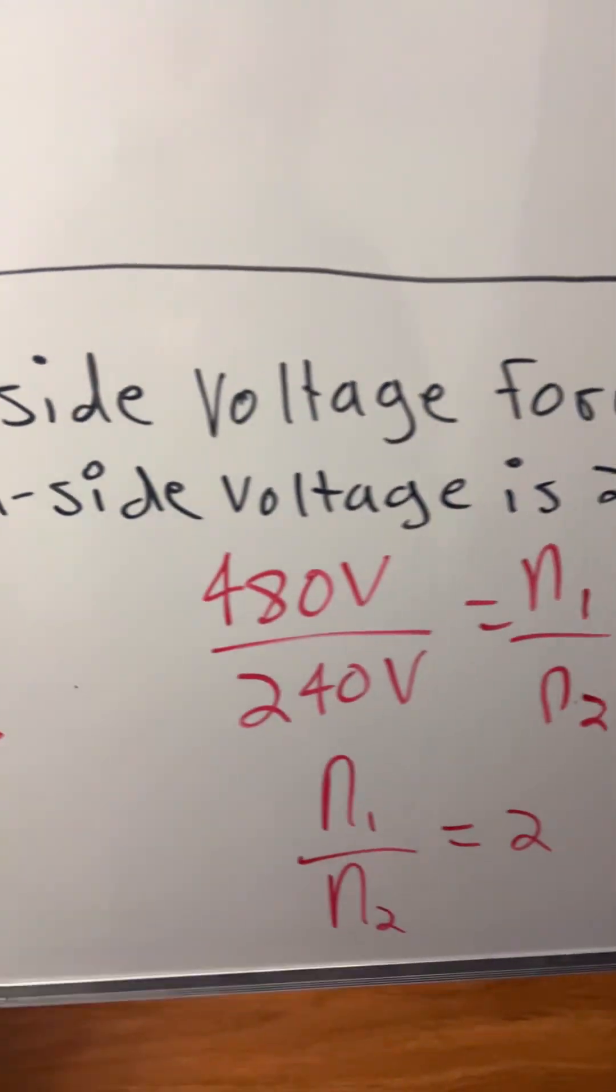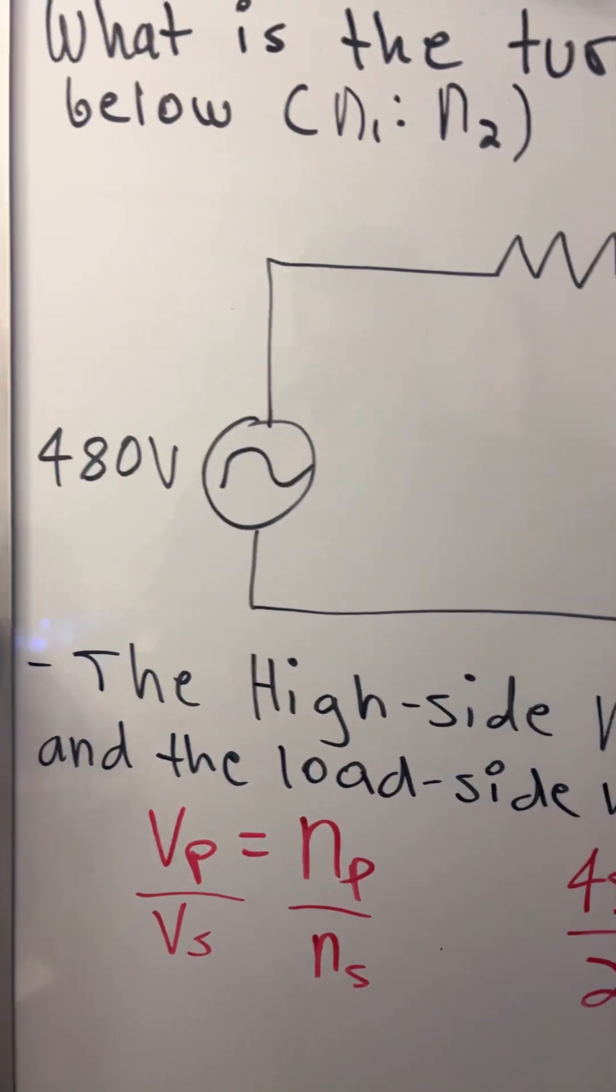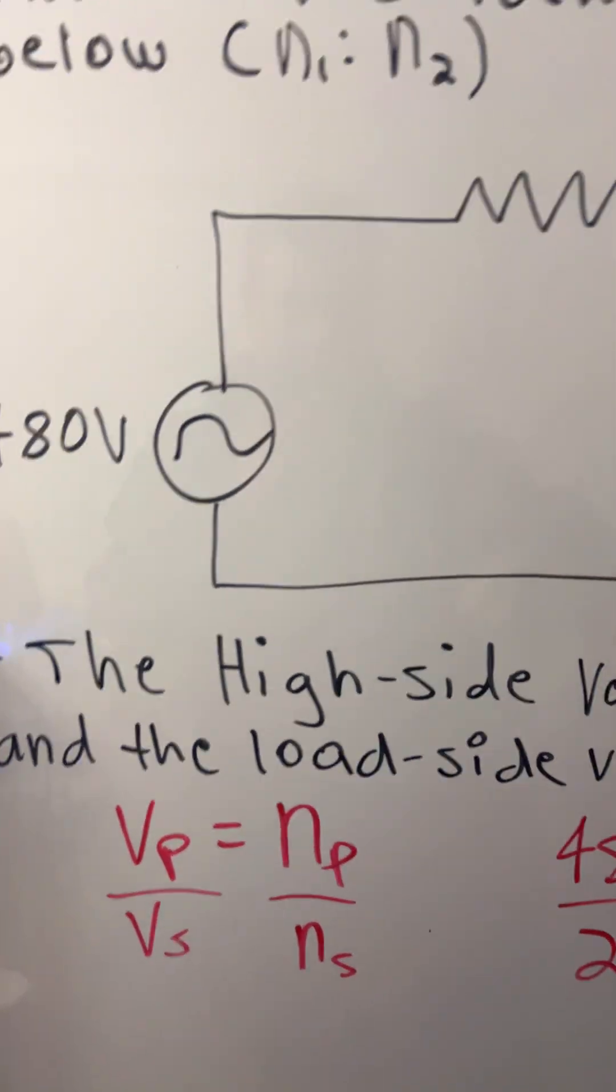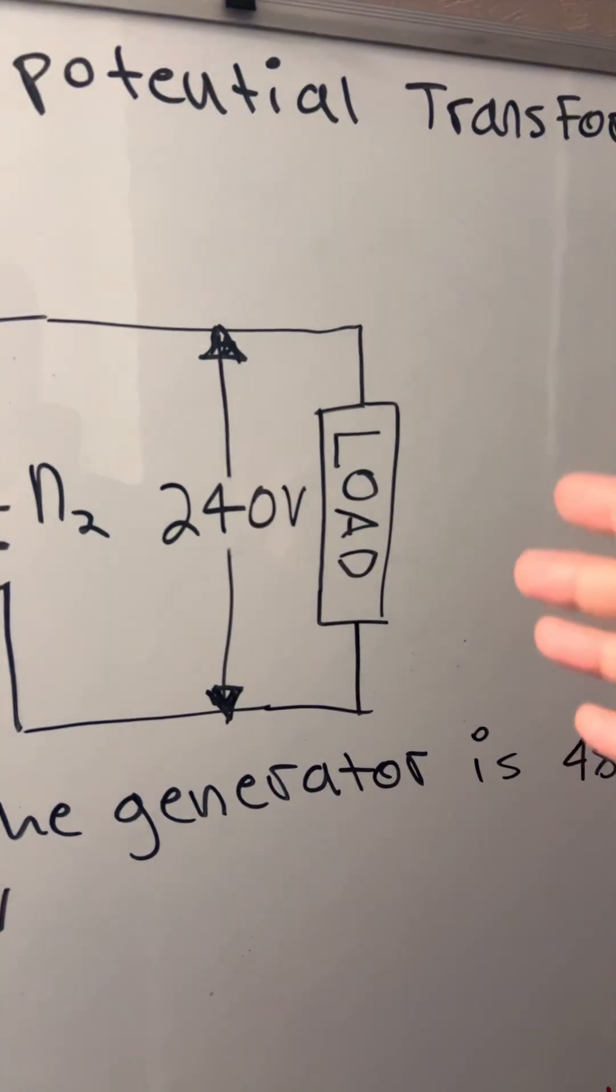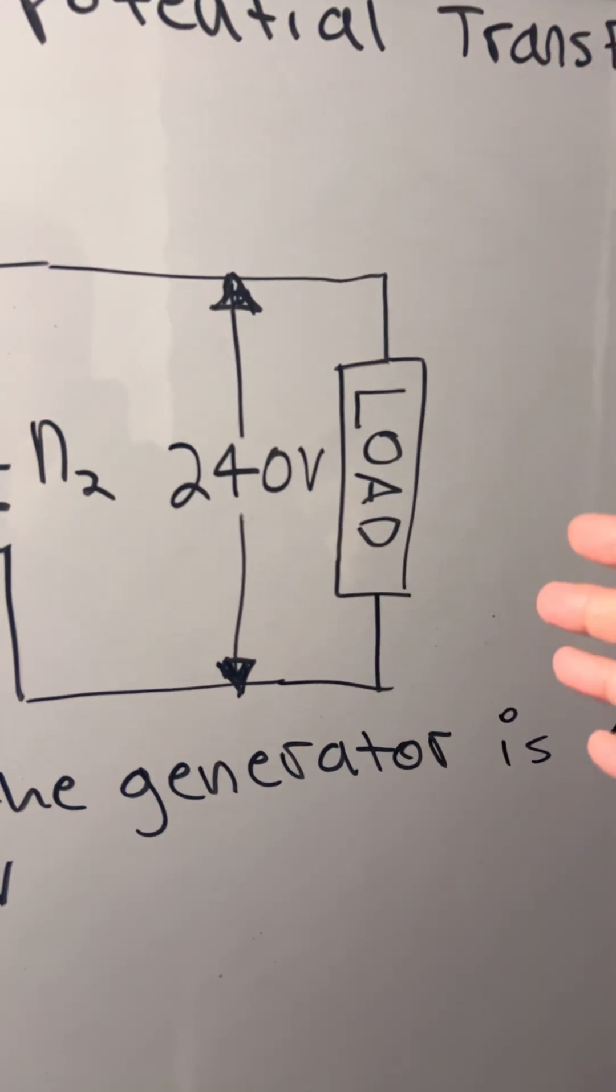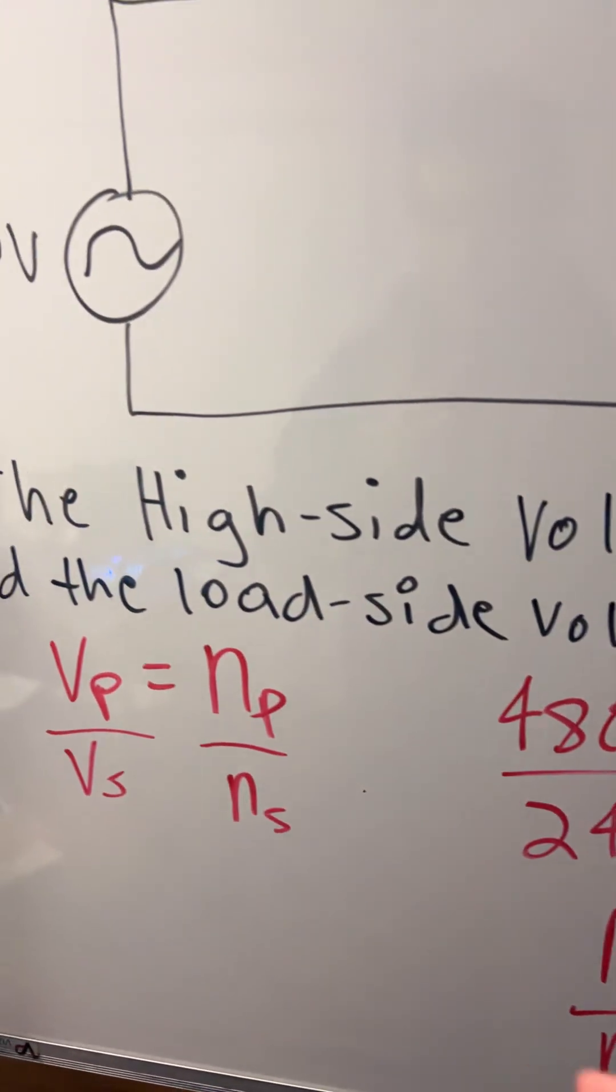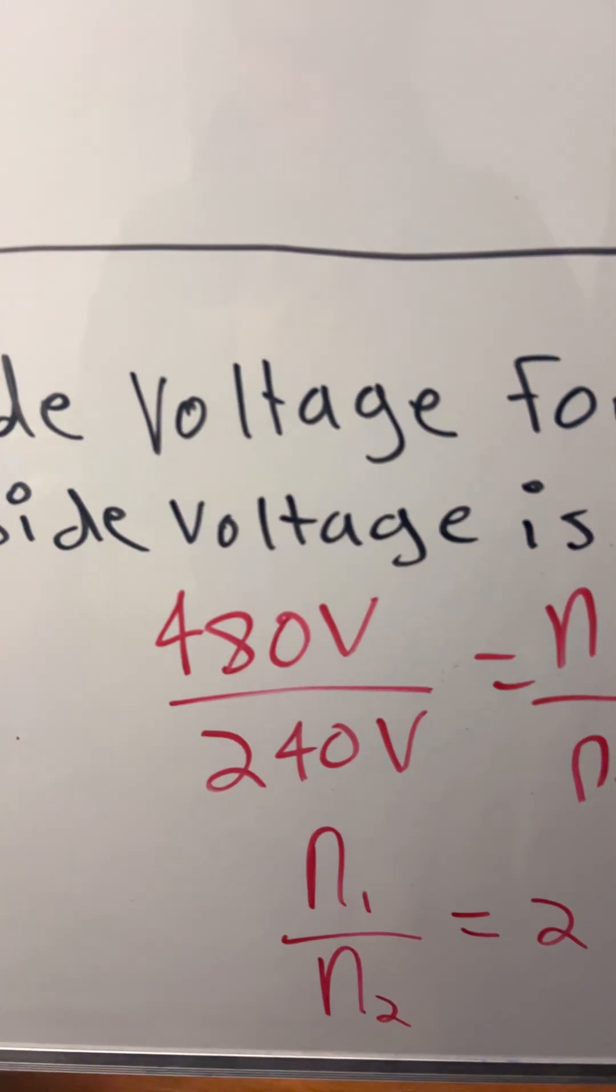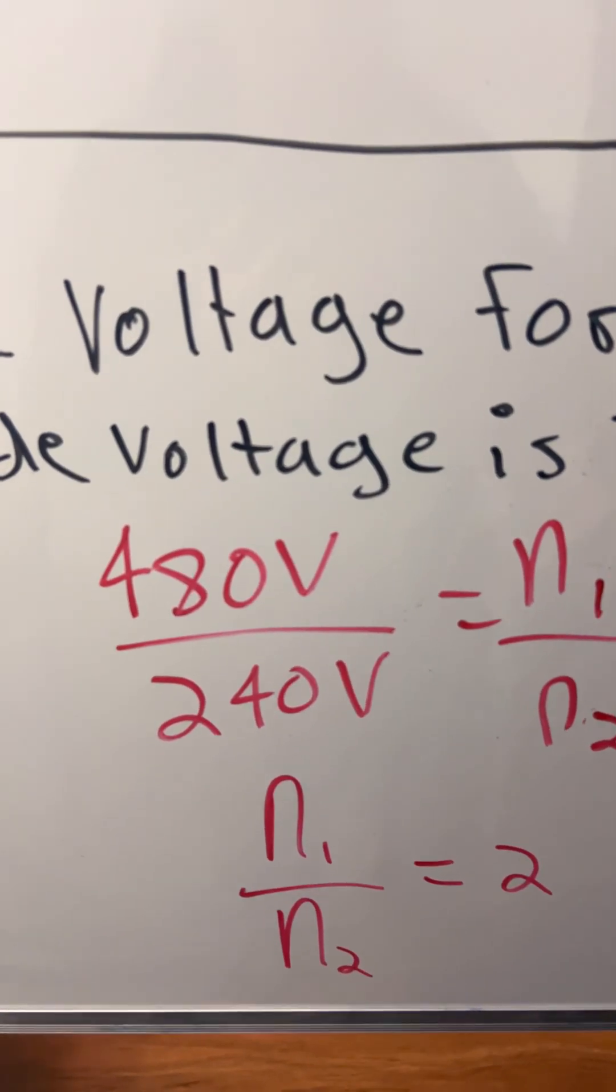We plug in the numbers given in the initial problem: the 480 volt source and the secondary 240 volt source on the load side. So we have 480 as the primary voltage and 240 as the secondary voltage.